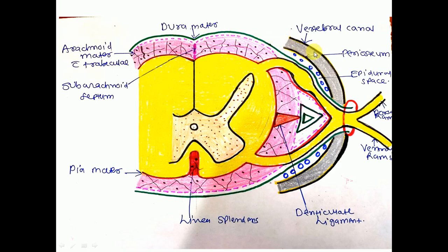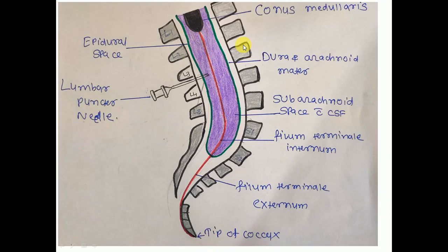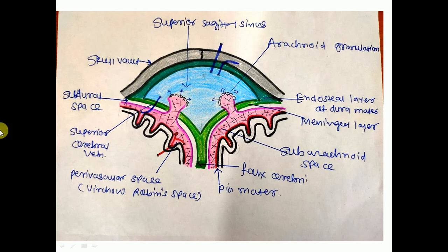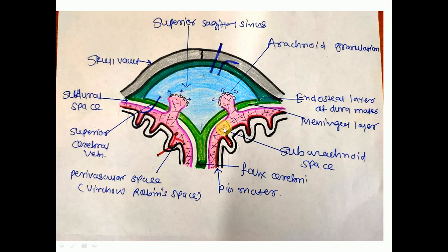The space between the dura mater and periosteum of the vertebrae is known as the epidural space. Now coming to the second layer: beneath the dura mater lies the arachnoid mater. We will first understand the arachnoid mater of the brain. This is the skull wall; this is the dura mater. There are two layers of the dura mater in the cranium: the endosteal layer and the meningeal layer. Between the endosteal and meningeal layers of the dura mater within the skull bone, there will be dural venous sinuses. Beneath the meningeal layer of the dura mater lies the arachnoid mater.